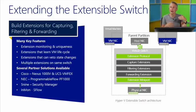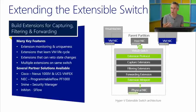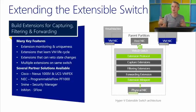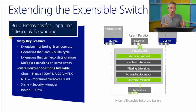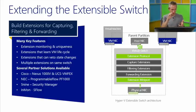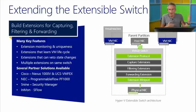A different extension point is InMon with their SFlow product, focused on monitoring the infrastructure — getting information about what's going on in traffic from virtual machines. With the extensible switch, they capture metrics traveling between VMs and build powerful visualizations of network activity. So you've got lots of key features exposed by the networking switch for monitoring, lifecycle events, state changes, multiple simultaneous extensions for firewall, antivirus, and more — these are just a few examples.